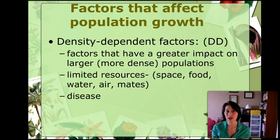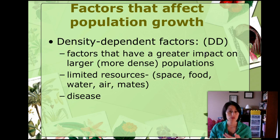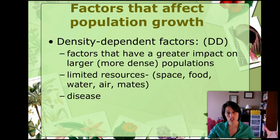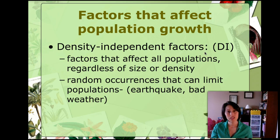There are two different kinds of factors that limit population growth. The first is density-dependent factors — factors that have a greater impact on larger or more dense populations. Bigger populations have more competition for limited resources like space, food, water, and mates. Disease is also a density-dependent limiting factor: the bigger and more dense the population, the more disease can spread throughout it.